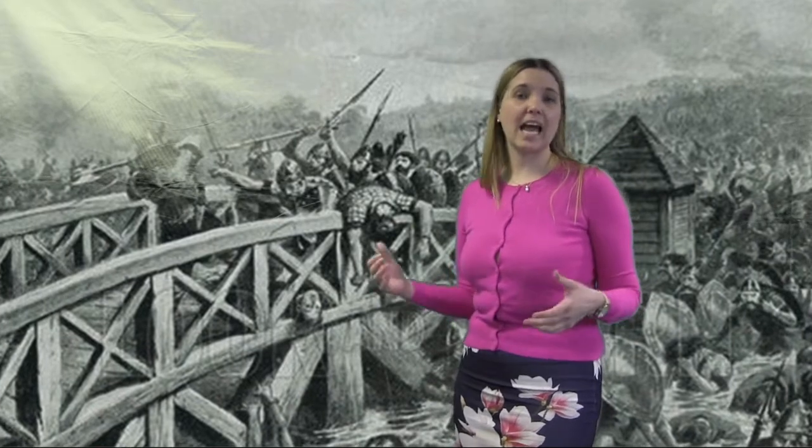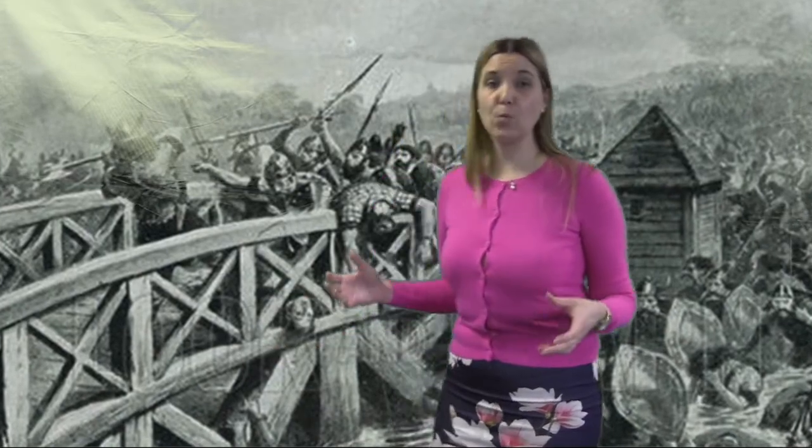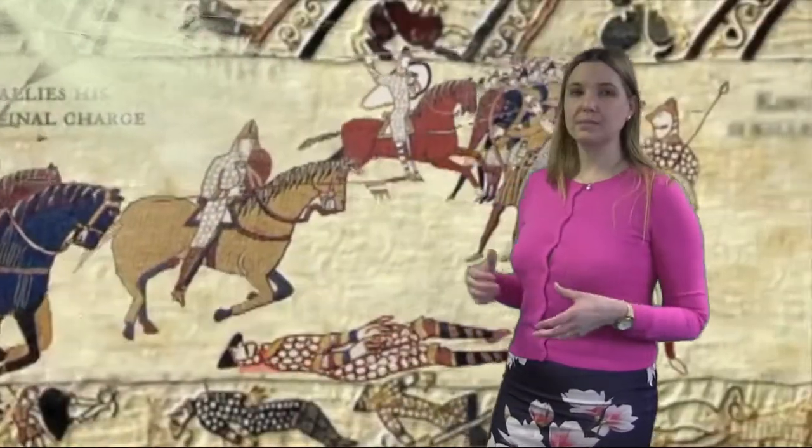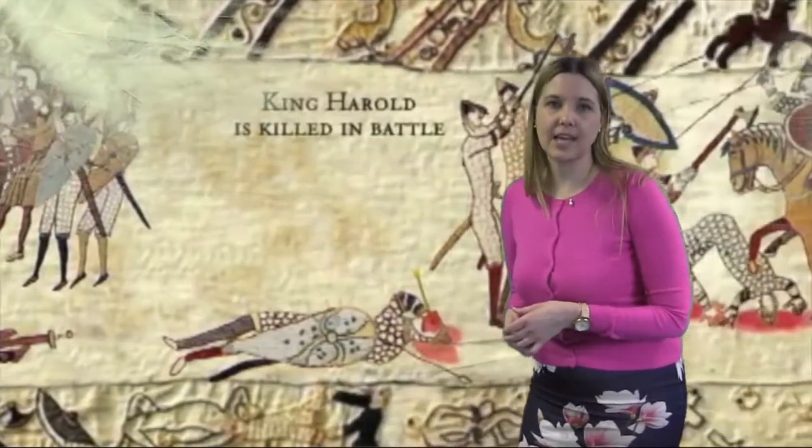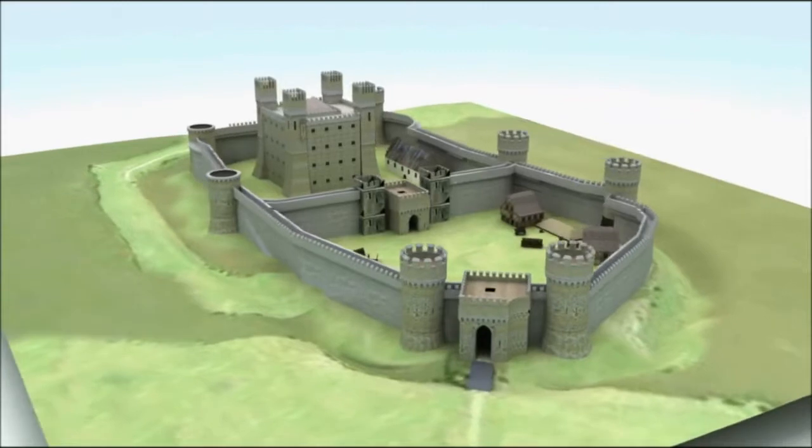Here we are at Stamford Bridge — not that Stamford Bridge, this Stamford Bridge. This is the battle site in 1066, where King Harold of England wins the battle before suddenly having to march 200 miles south to fight William of Normandy. William — spoiler alert — kills Harold and manages to become King of England. The GCSE course looks at how William controlled the English people when he became king, and also the rebellions he faced and the castles that he built.